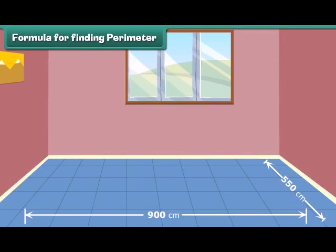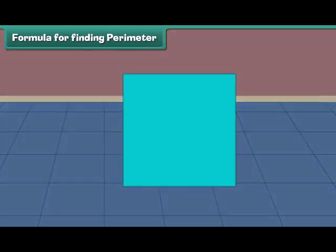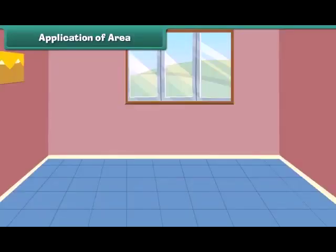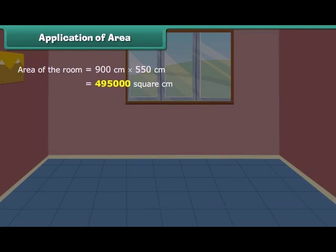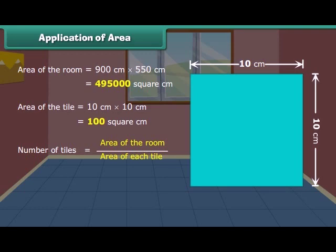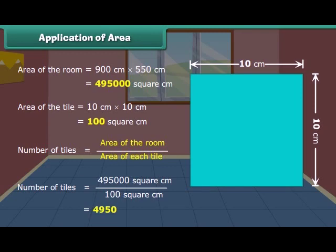This is a room of length 900 centimeters and width 550 centimeters. Rohan wants to change the tiles of the floor. If each side of the new tile is 10 centimeters, then how many tiles will be needed? Area of the room is equal to length multiplied by width, which is equal to 4,95,000 square centimeters. Area of the tile is equal to 10 multiplied by 10, which is equal to 100 square centimeters. We can find the number of tiles needed by dividing the area of the room by the area of each tile. Thus, number of tiles needed is equal to 4,950.